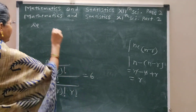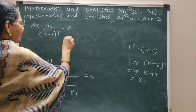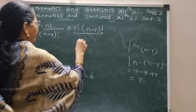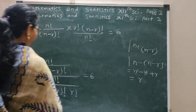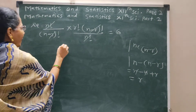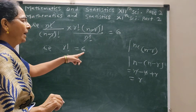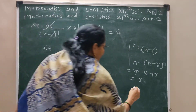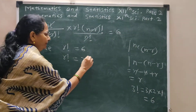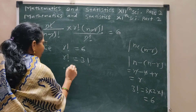Simplify further: the N factorial and N minus R bracket factorial terms cancel. We are left with R factorial equals 6. Since 3 factorial equals 3 times 2 times 1 equals 6, we write 3 factorial for 6. Therefore R factorial equals 3 factorial, so R equals 3.